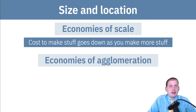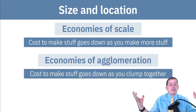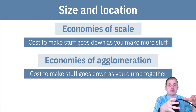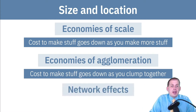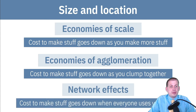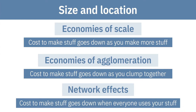You also have this idea of economies of agglomeration, which means the cost to make stuff goes down as people start clumping together — as firms start locating physically next to each other, the cost for all of them to create stuff actually decreases. And then there's this idea of network effects, where as people use your stuff, it actually makes it cheaper for you to create more stuff.